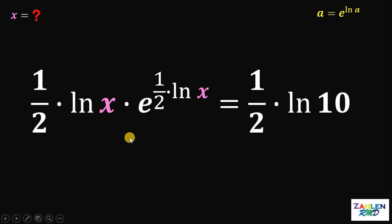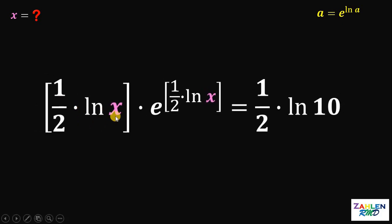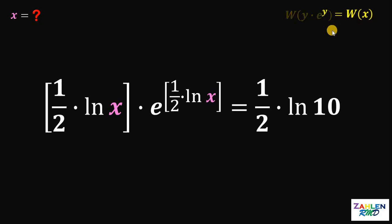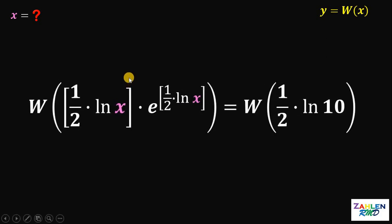The reason we did that is because 1 half times ln of x is also the exponent of e, which is 1 half times ln of x. We will now use a special function. If we have an equation y times e raised to y equals x, and we apply the Lambert W function on both sides — the Lambert W function of y times e raised to y gives us the value of y. So y equals W of x. Applying the Lambert W function to our equation, we get: W of 1 half times ln of x times e raised to 1 half times ln of x equals W of 1 half times ln of 10.